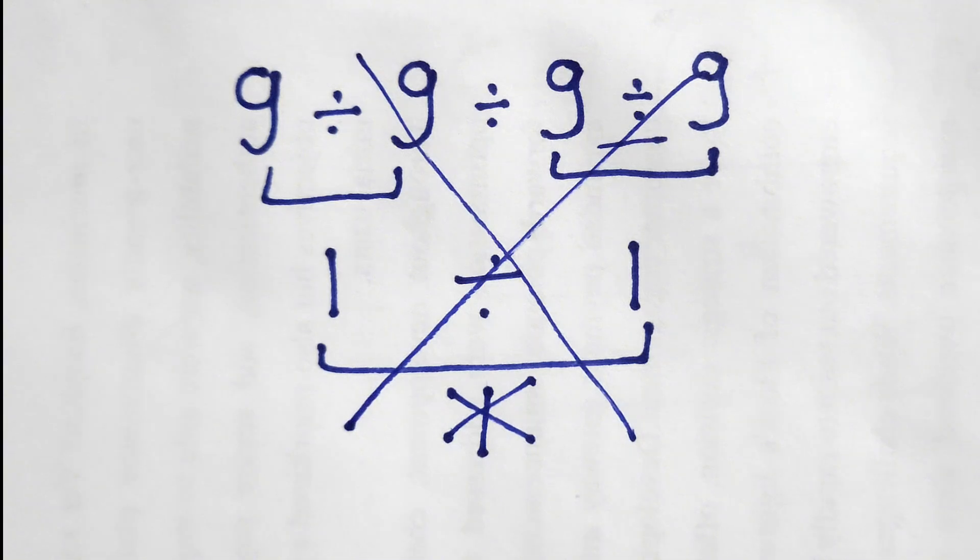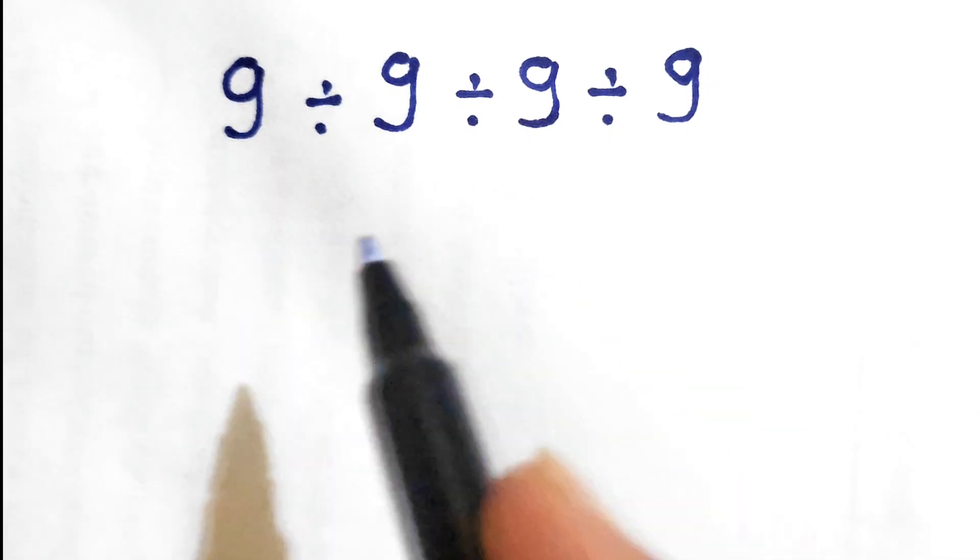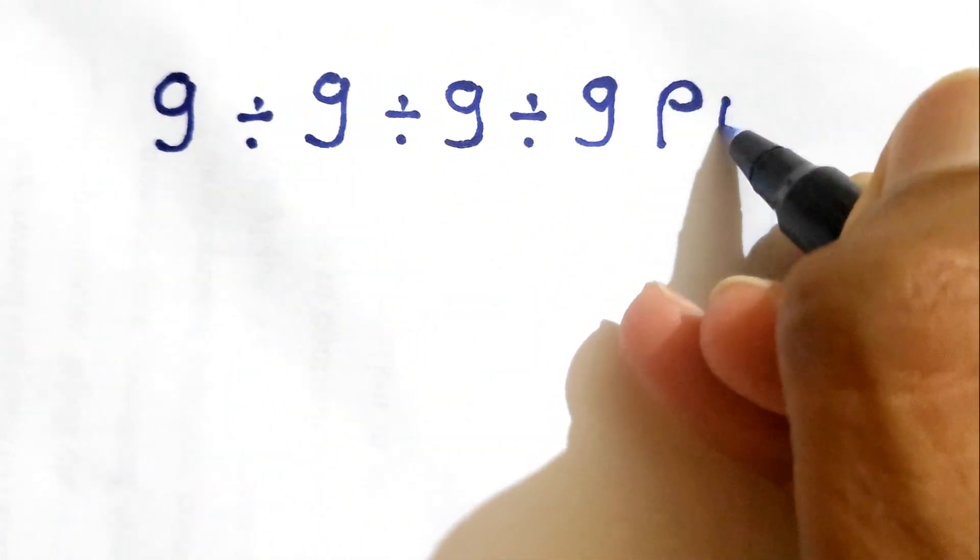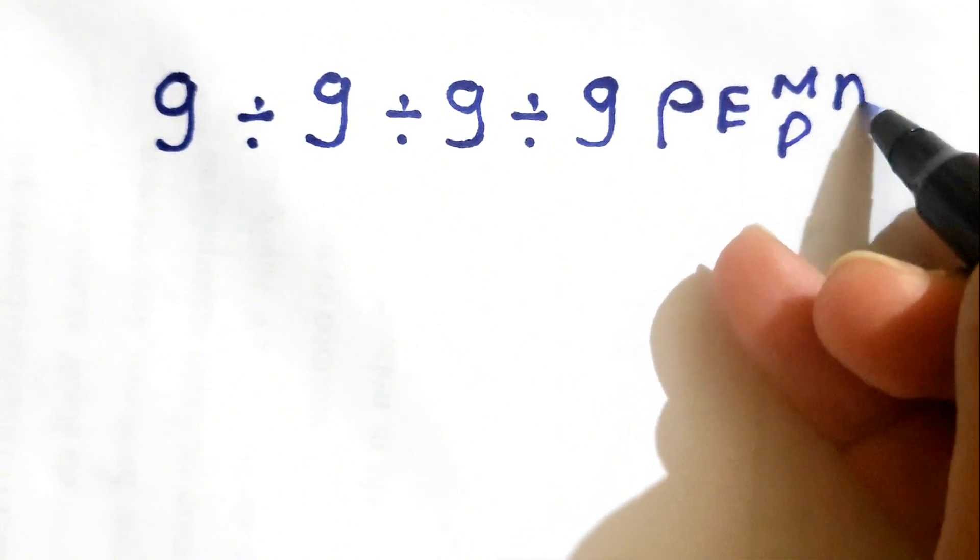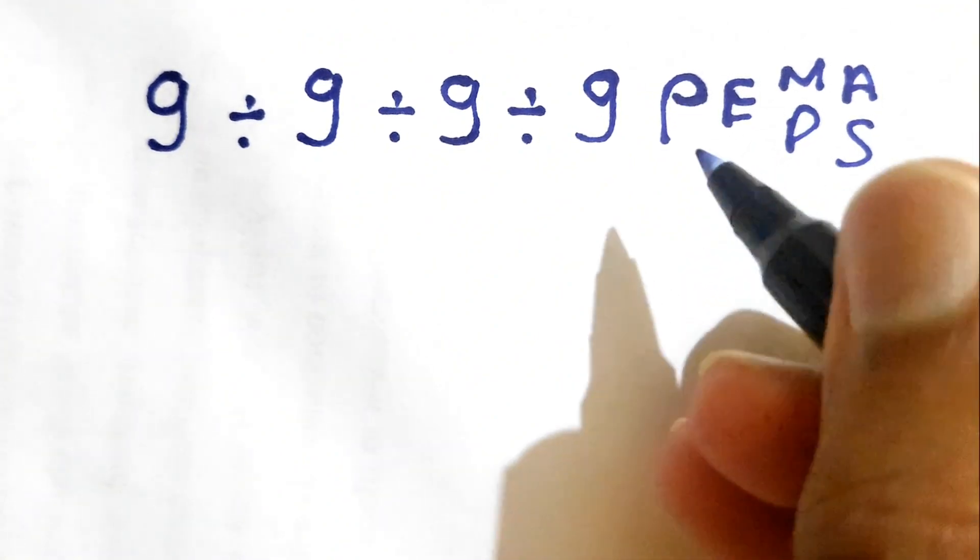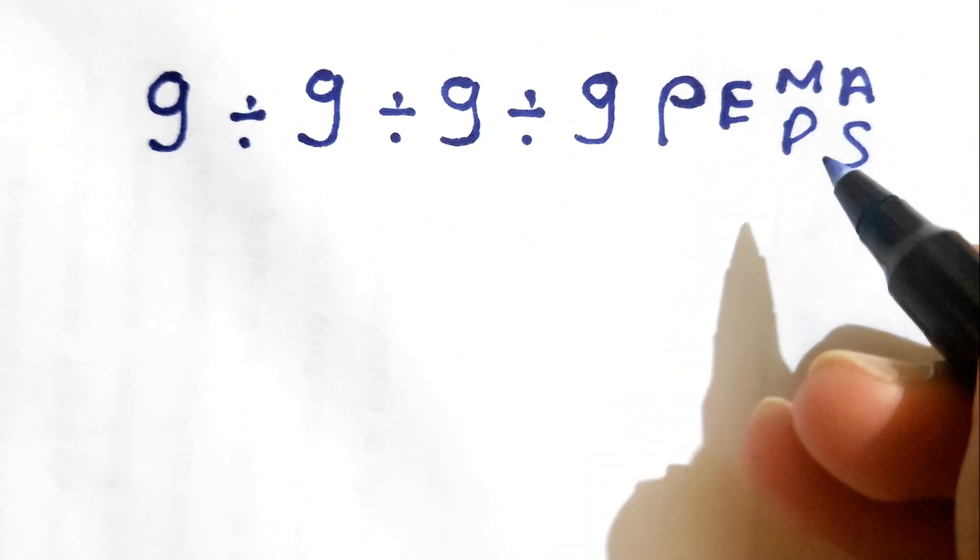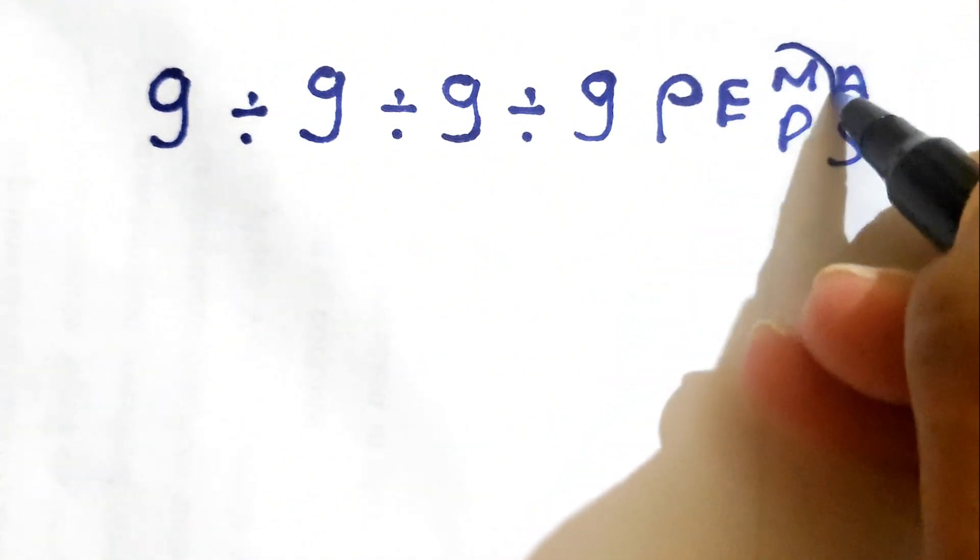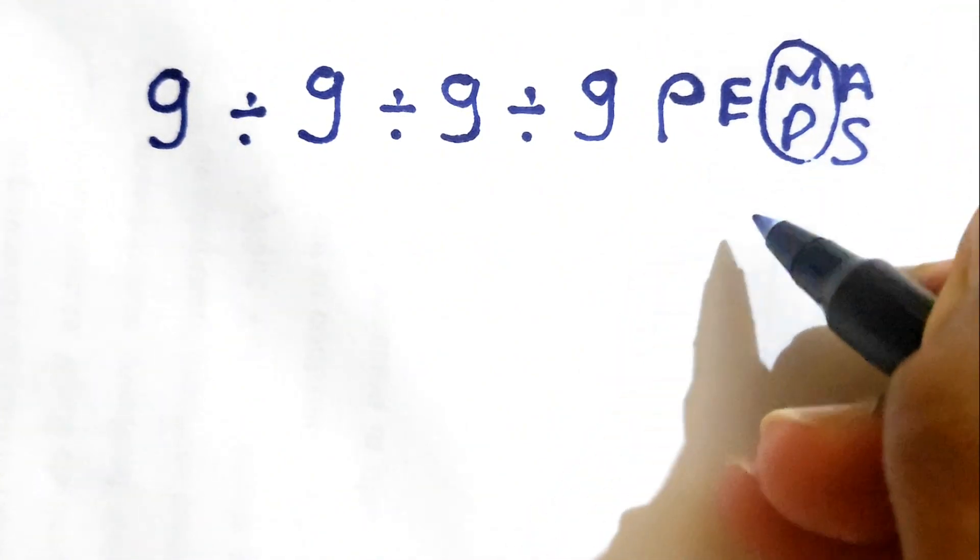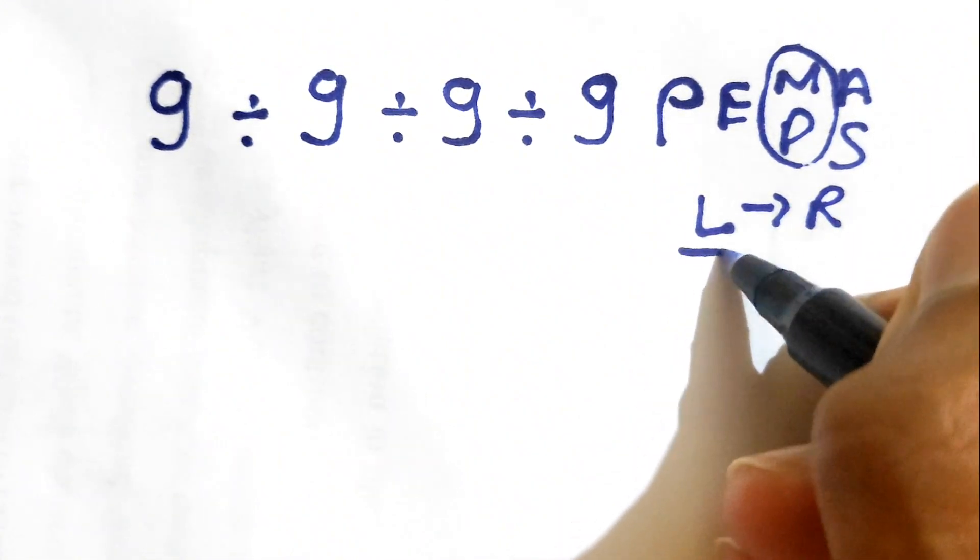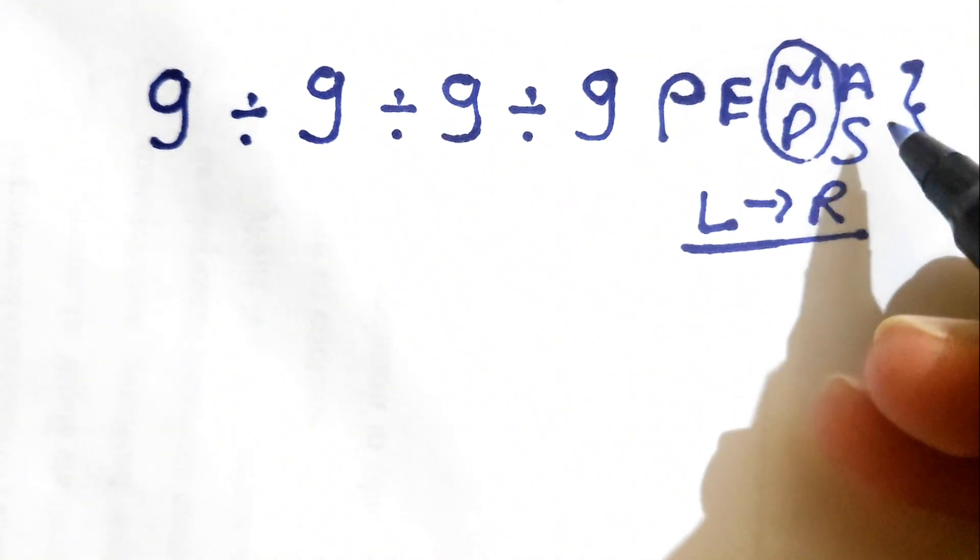Let's see how we can solve this in a proper manner. For solving this we need to follow order of operations, also called PEMDAS, which stands for parenthesis, exponents, multiplication, division, addition, and subtraction. The priority of multiplication and division is the same, but we need to go from left to right, whichever comes first. The same applies for addition and subtraction.